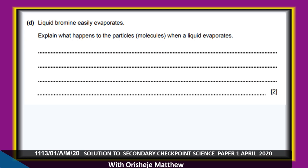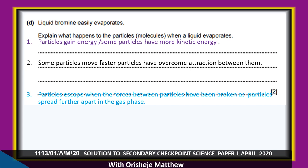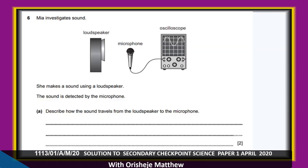Part D: liquid bromine easily evaporates. Explain what happens to the particles when a liquid evaporates. Some particles in the bromine have more kinetic energy and move faster. They overcome the attraction between them and other particles. Particles escape when the forces between them are broken, and spread further apart in the gas phase.